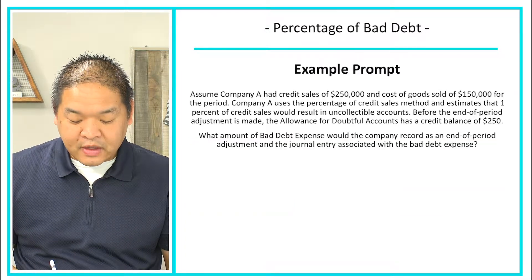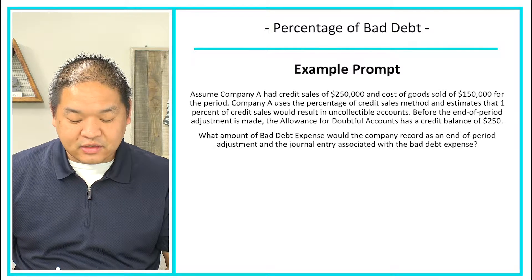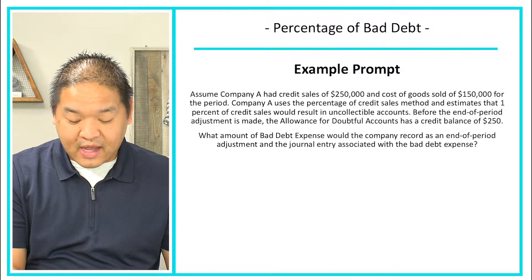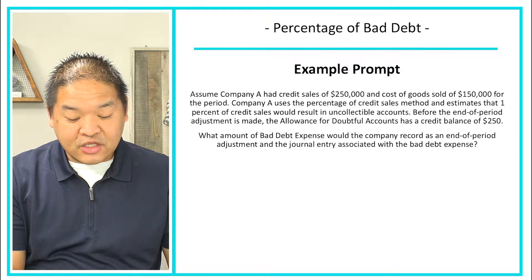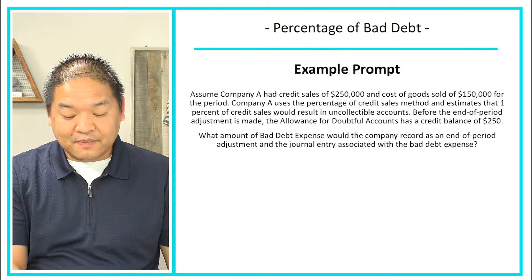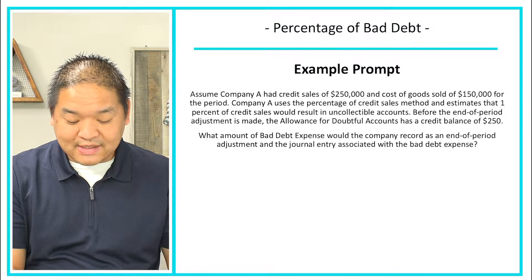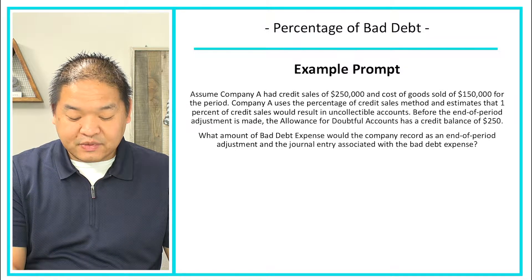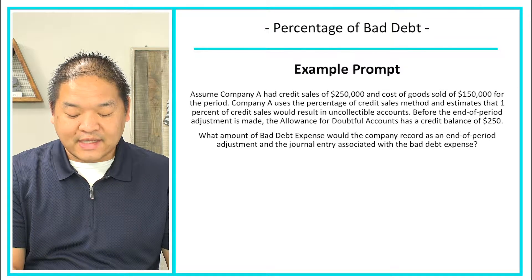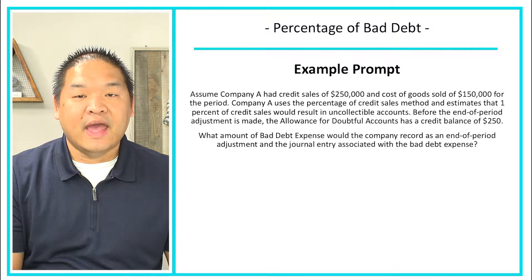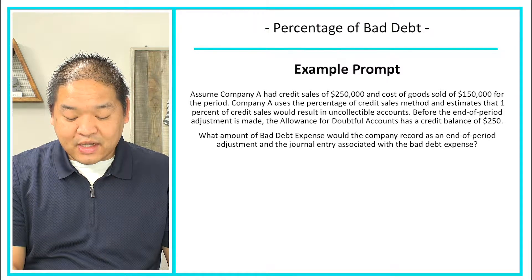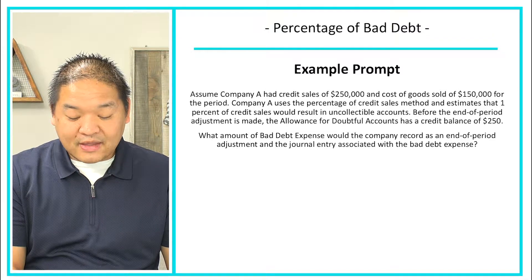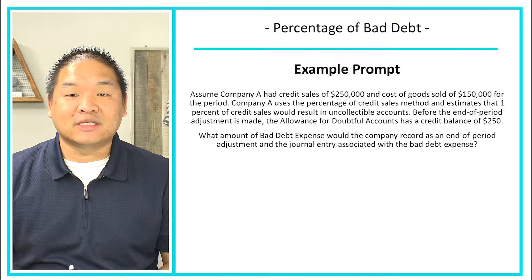Let's take a look at the example prompt. Assume Company A had credit sales of $250,000 and a cost of goods sold of $150,000 for the period. Company A uses the percentage of credit sales method and estimates that 1% of credit sales would result in uncollectible accounts. Before the end-of-period adjustment is made, the allowance for doubtful accounts has a credit balance of $250. What amount of bad debt expense would the company record as an end-of-period adjustment, and what is the journal entry associated with the bad debt expense?